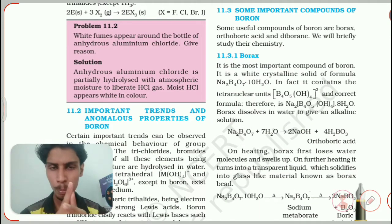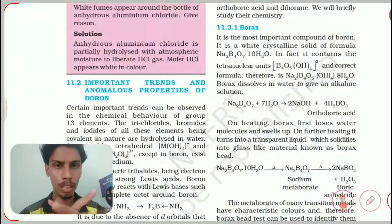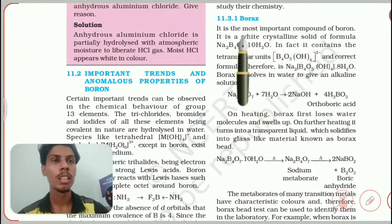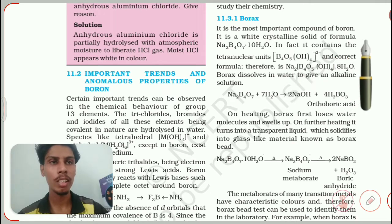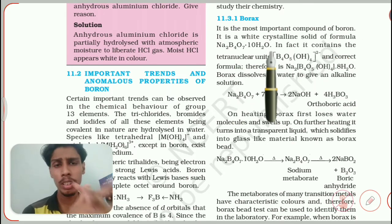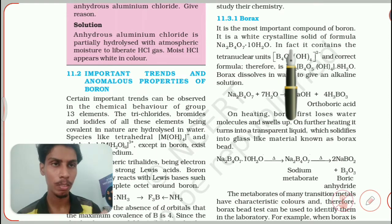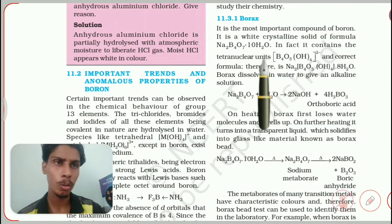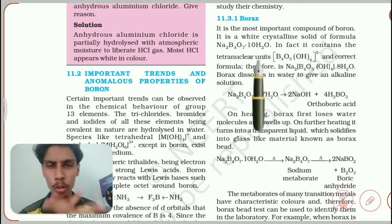Now we are going to see important compounds of boron. The first one is Borax. Borax is the most important compound of boron — in any chemistry textbook you will see this word everywhere. It is a white crystalline solid with formula Na₂B₄O₇·10H₂O. For exam preparation (JEE, NEET), you should know its appearance — white and crystalline — and its formula. The 10H₂O is known as the water of crystallization. If you don't know about water of crystallization, just Google it for examples.